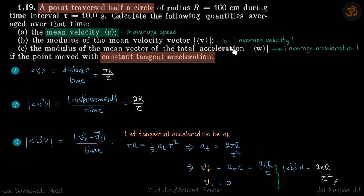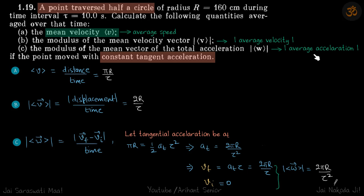Second, average velocity is the magnitude of displacement divided by time. The displacement in a semicircle is 2r, so the average velocity is 2r/τ.